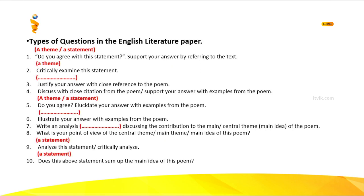Number one: 'Do you agree with this statement? Support your answer by referring to the text.' Before that, they will give you a theme or statement. Number two: 'Critically examine this statement.' This is where you find it difficult — what does 'critically' mean? Critically means you need to have a lot of evidence. How do you find evidence? You need relevant quotations and relevant techniques. If you have those, you can critically examine anything — you are like a lawyer because you have evidence.